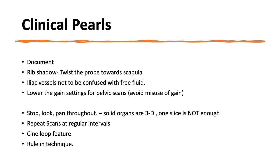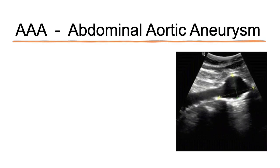EFAST scan is a dynamic scan — always stop, look, pan throughout. All structures within the body are solid organs in 3D, so one slice may not be enough. Always pan, fan, slide, and rock the probe. Repeat the scan if necessary — a first scan with no fluid does not mean there is no solid organ injury. If concerned, go for a CT scan or ask for expert opinion. Try to use the CineLoop feature to review images without rescanning. Remember, point of care ultrasound is a ruling-out technique — if in doubt, go for a CT scan.